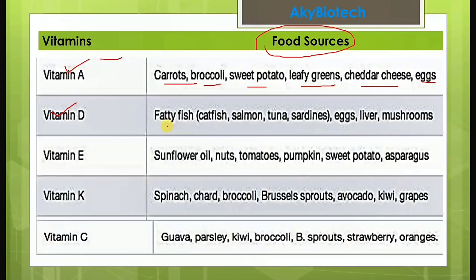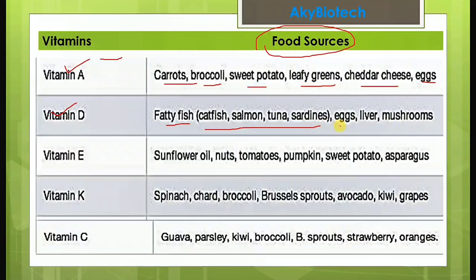Vitamin D is found in fatty fish including catfish, salmon, tuna, and sardines, as well as eggs, liver, and mushrooms.